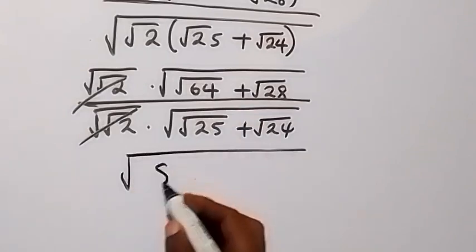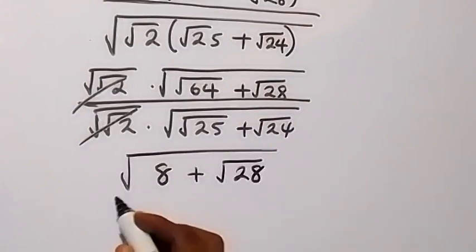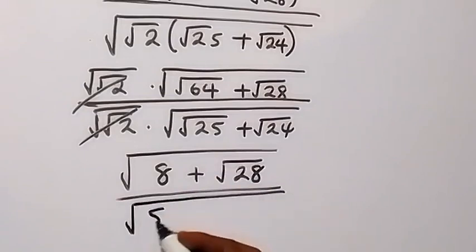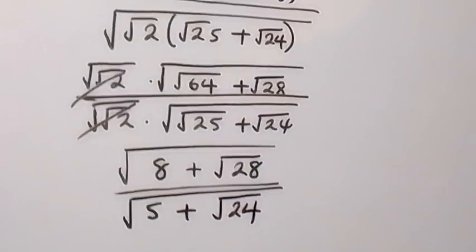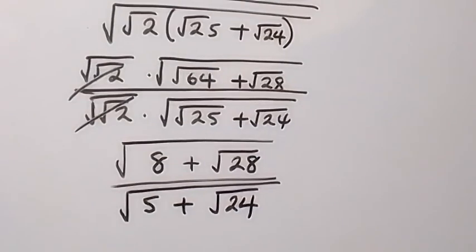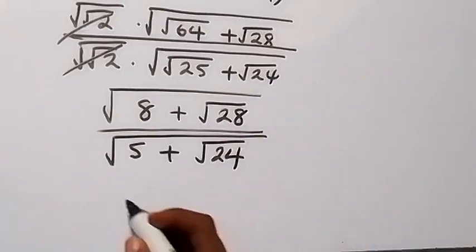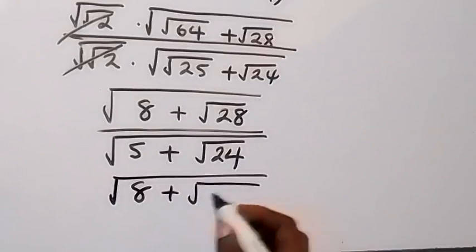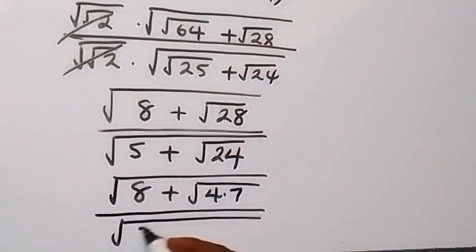We have square root of 8 plus root 28, then divided by — here root 25 is 5 — so we have square root of 5 plus root 24. Then we can express 28 as 4 times 7 and 24 as 4 times 6. So we now have square root of 8 plus root 4 times 7, then over square root of 5 plus root 4 times 6.